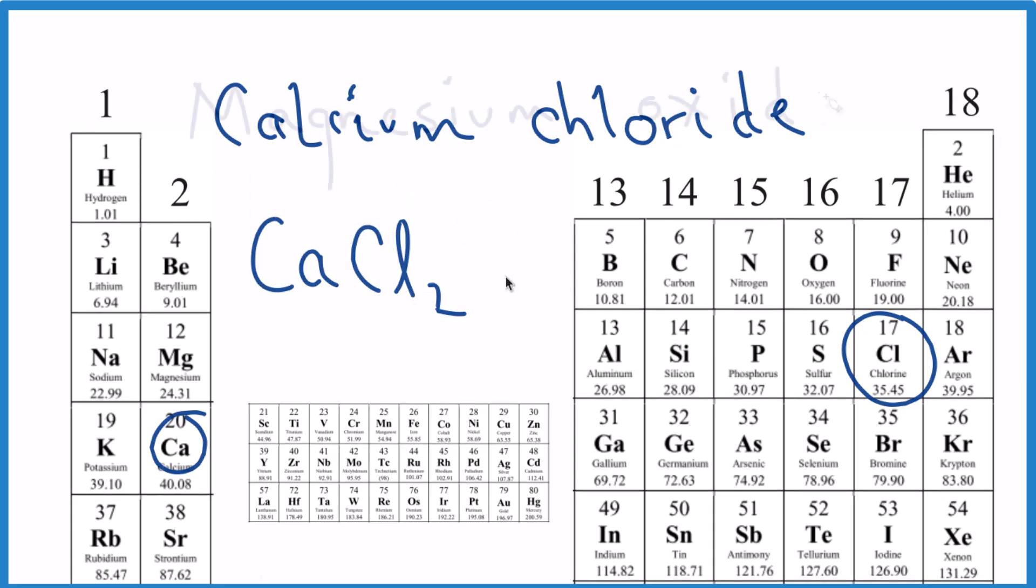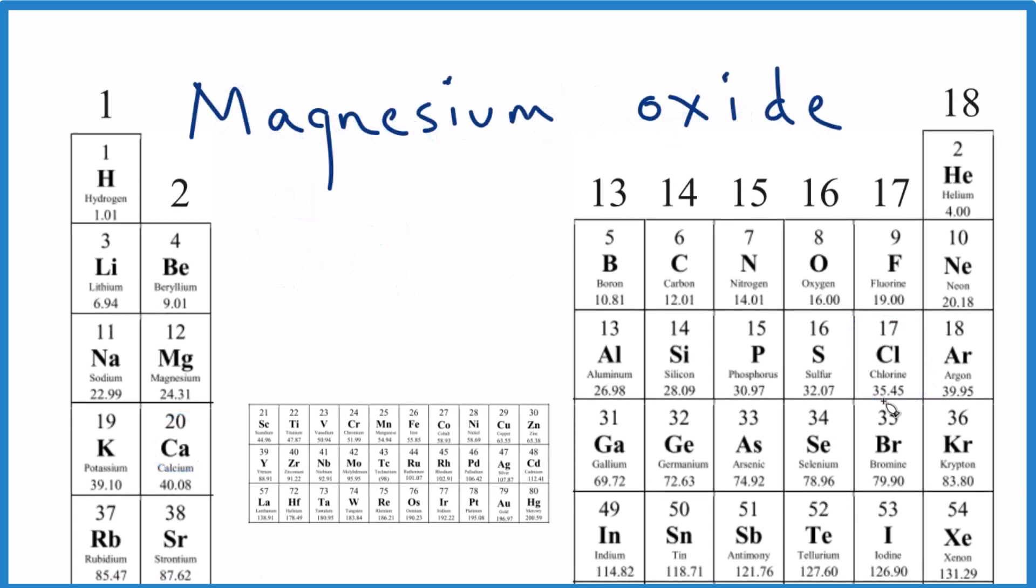Let's do another one. Magnesium oxide. We have magnesium—that's a metal because it's on this side of the periodic table—and then oxygen over here with our non-metals. So we'd write Mg and then O.